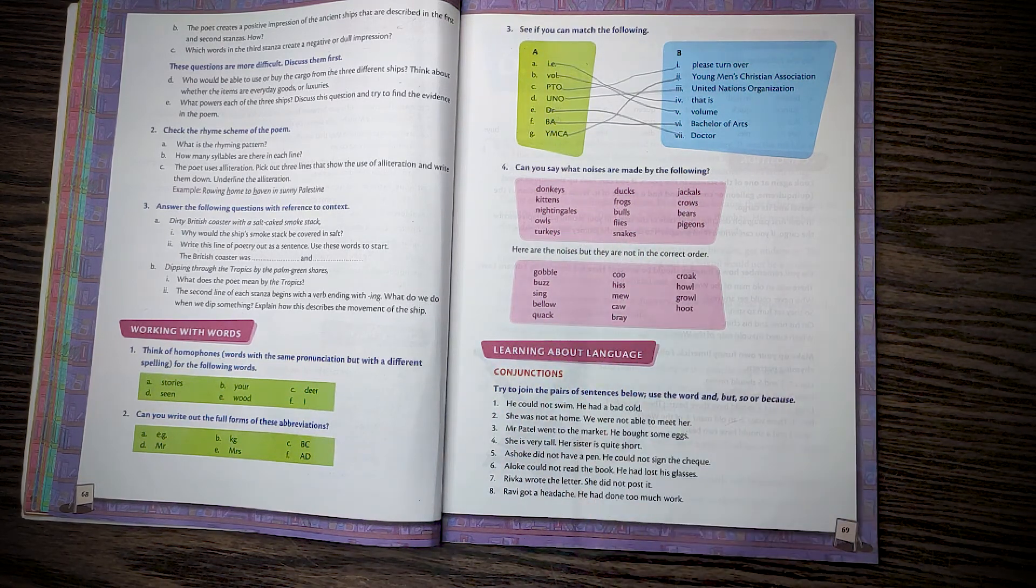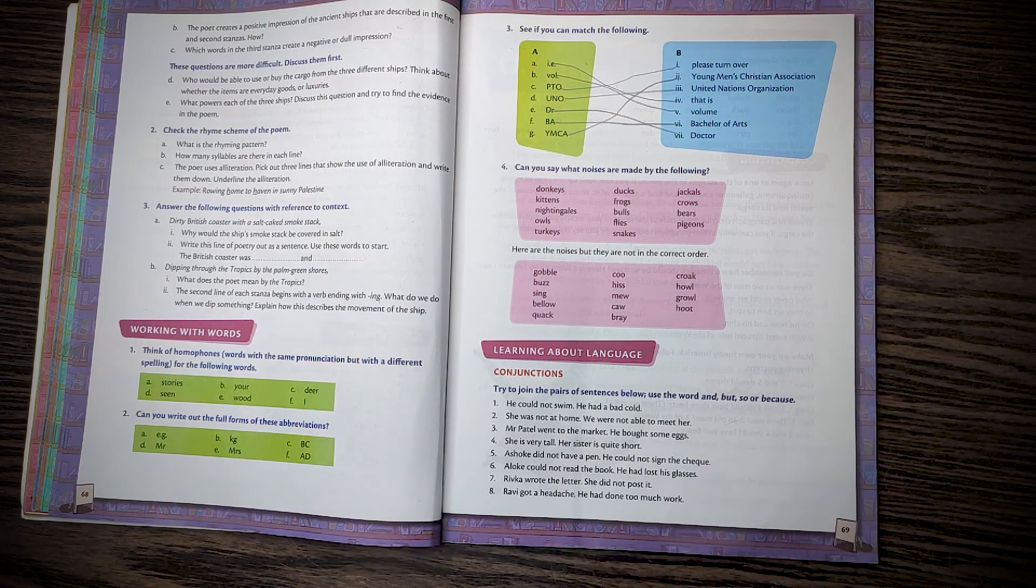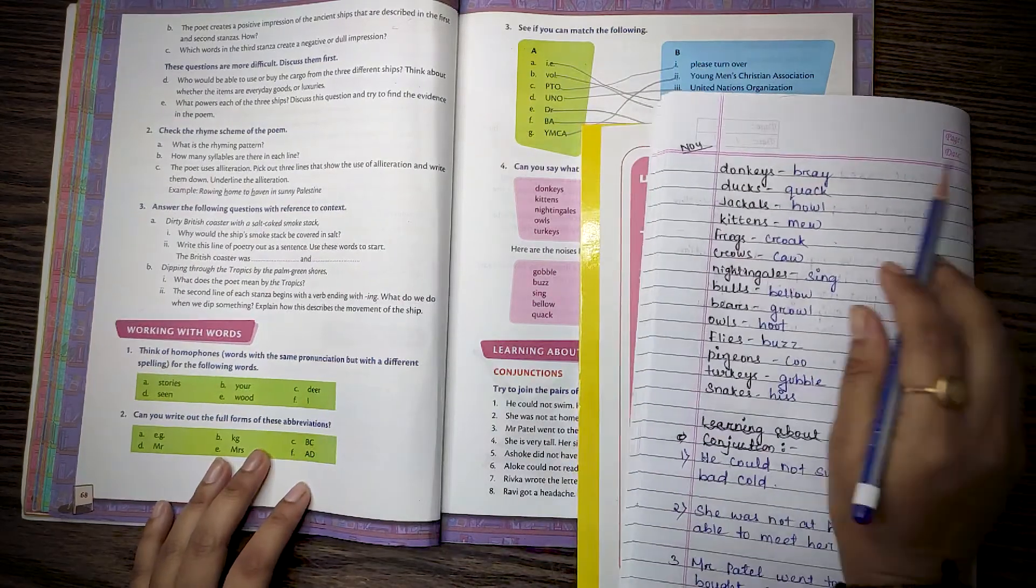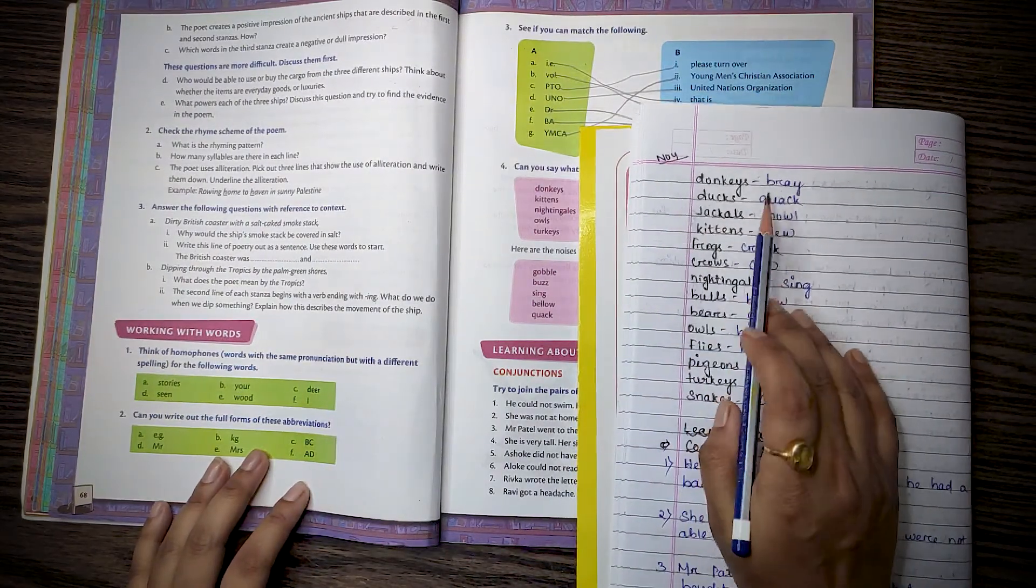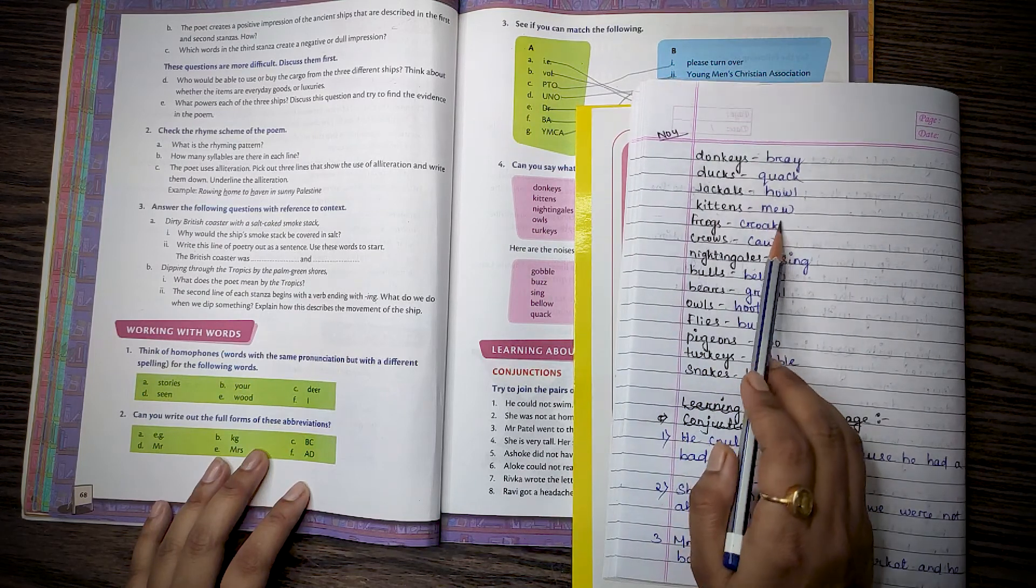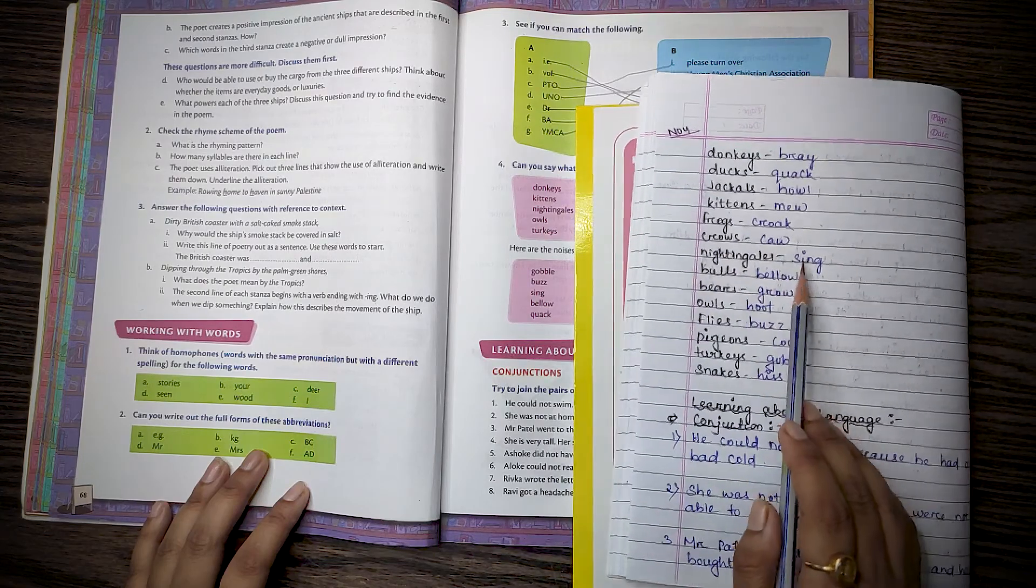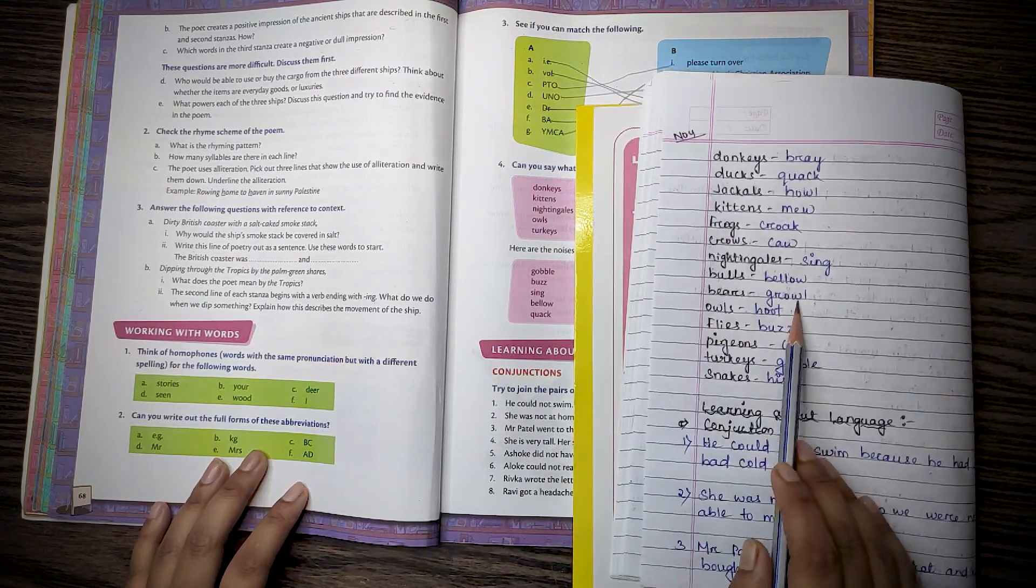Okay, then number 4. Can you say what noises are made by the following? I have written the answer of this. Donkeys bray, ducks quack, jackals howl, kittens mew, frogs croak, horses neigh, cows moo, nightingales sing, bulls bellow, bears growl, owls hoot, flies buzz, birds chirp, pigeons coo, then turkeys gobble, snakes hiss.